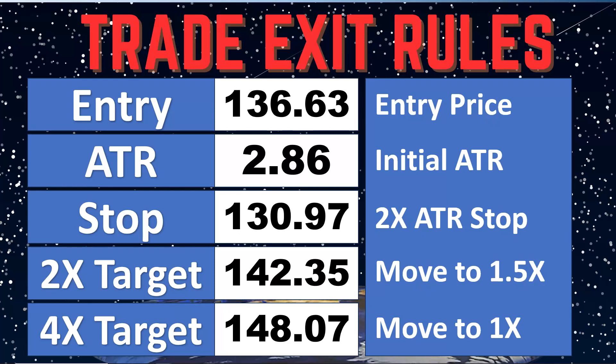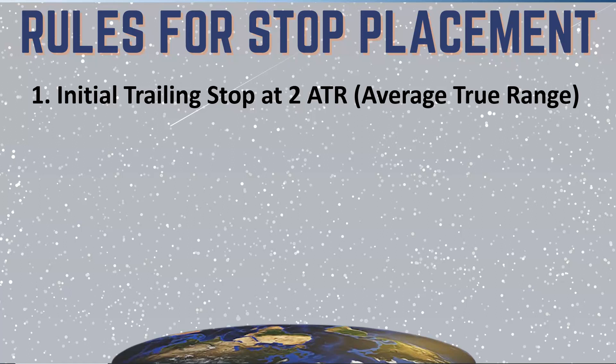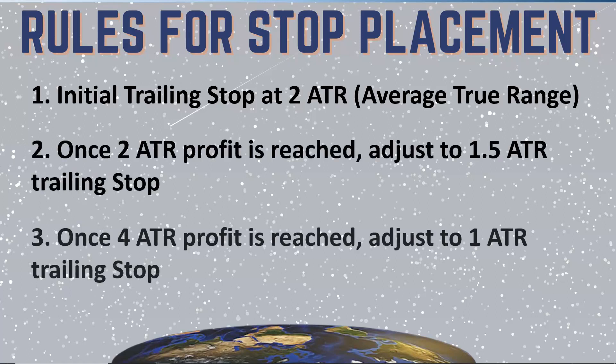We've already got our initial stop in there — 2x ATR. It's never going below $130.97 unless there's a gap. When price moves our way: at the first target we move to a 1.5x ATR stop; at a 4x ATR profit we move up to a 1x ATR trending stop, snugging it up as we get more profit. After that, we don't do anything — we sit back and let it all take place. You have no control at this point, so just sit back and enjoy. Goodbye, everyone.